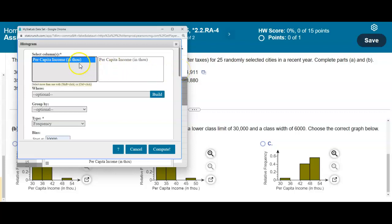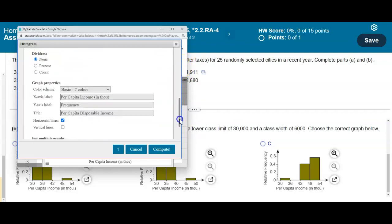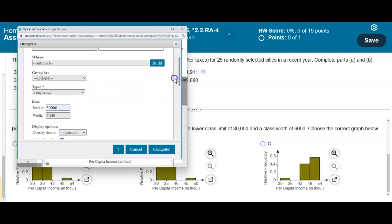Because everything in here we've already created. We create the name of the column. We've created all the information. The only thing that we need to do now is change the type. And in this case, we want the relative frequency histogram. So we're just going to select relative frequency histogram, and then select compute.